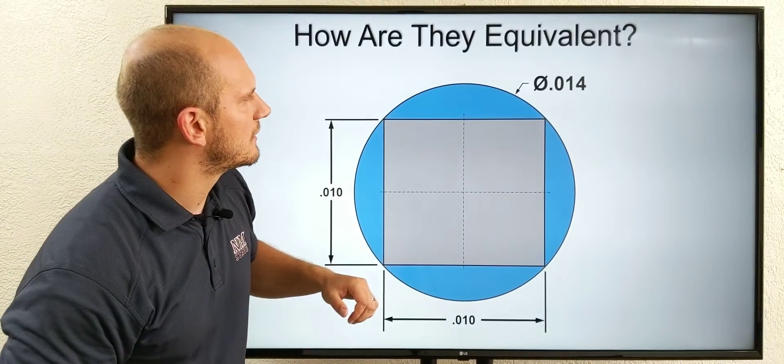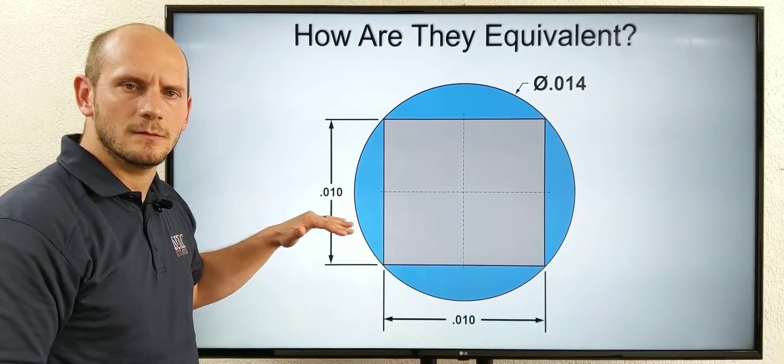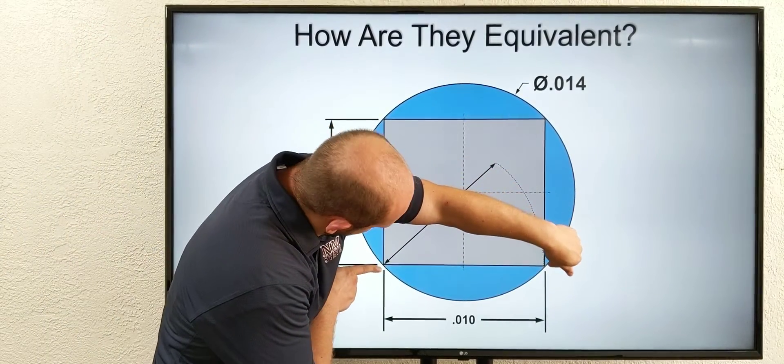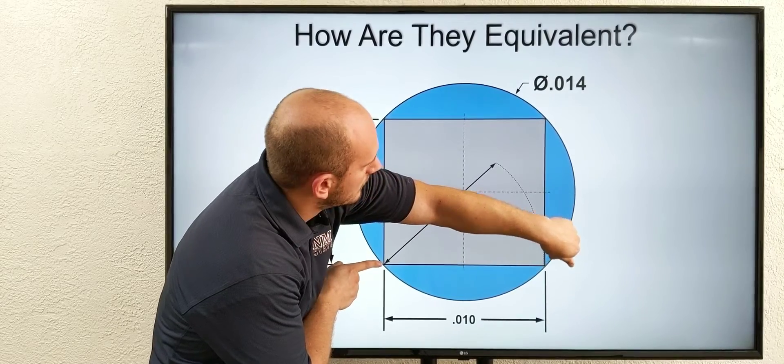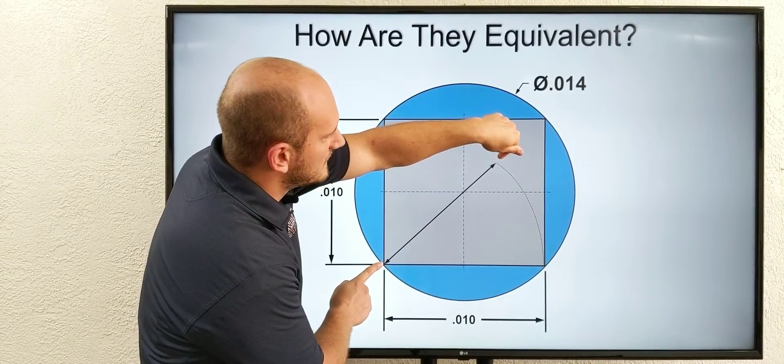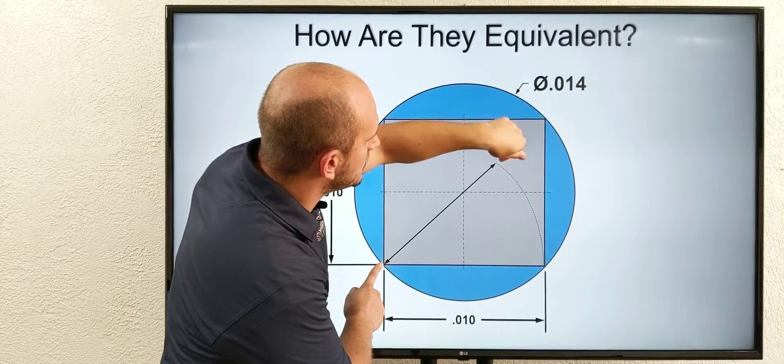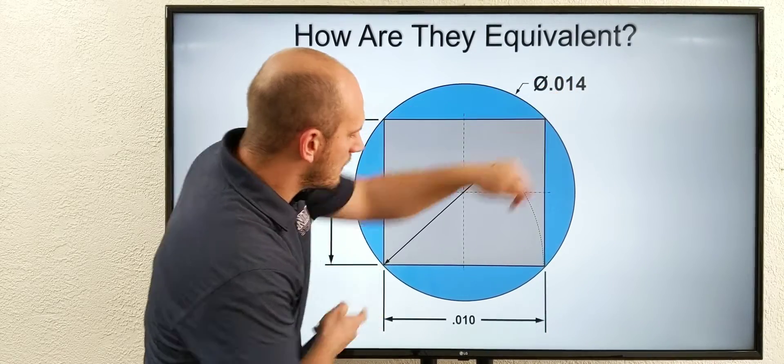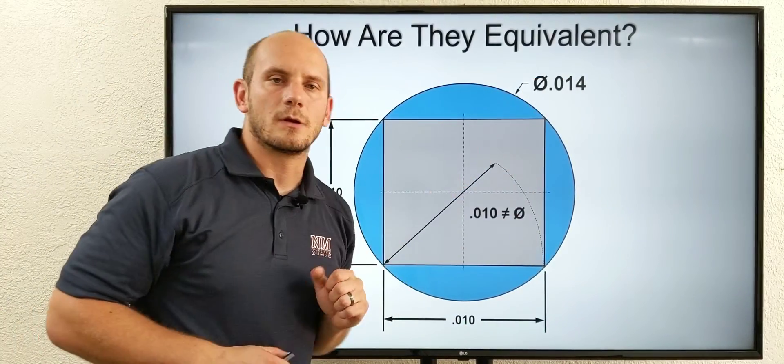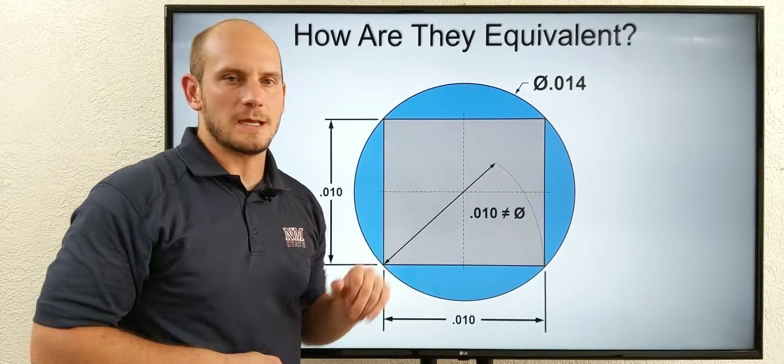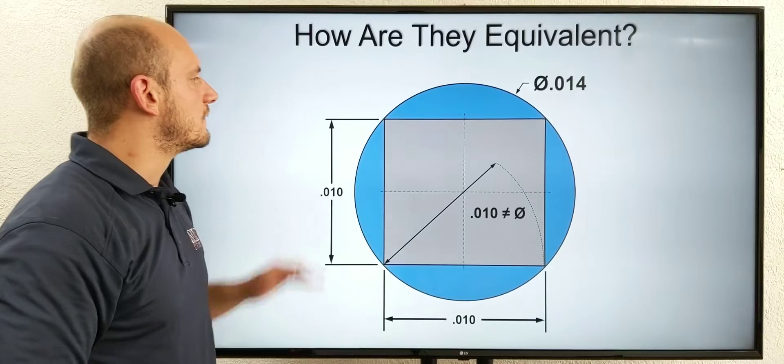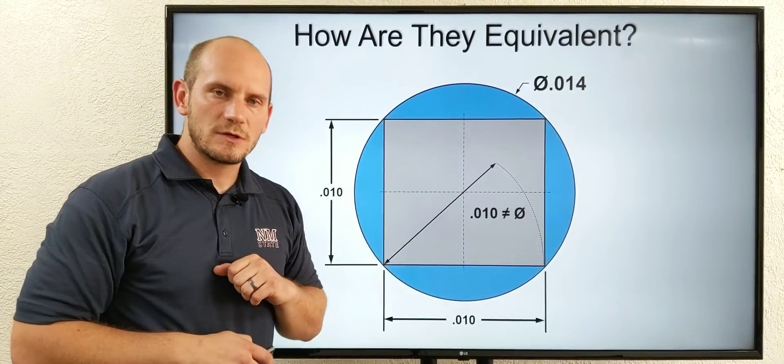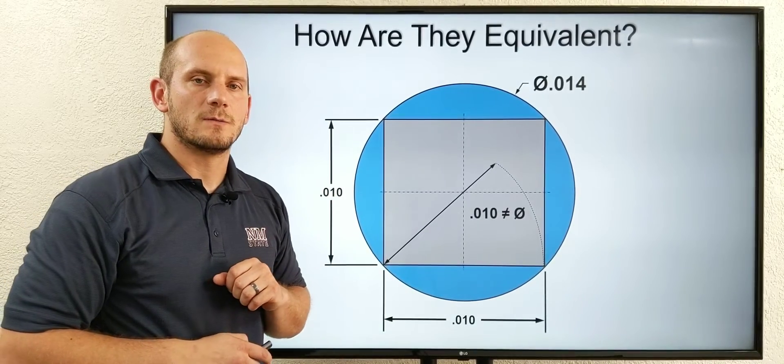How come that diameter is fourteen thousand and not ten? If you're wondering that, let's first look here. Let's pivot about this point, right up to here. Is that the diameter of our GD&T position tolerance? No, it's not. We have a long ways to go. So no, ten thousandths is not our equivalent positional tolerance diameter. Fourteen is. If you're wondering how to convert any traditional rectangular tolerance zone into its equivalent GD&T position tolerance, look at my next video coming out soon.